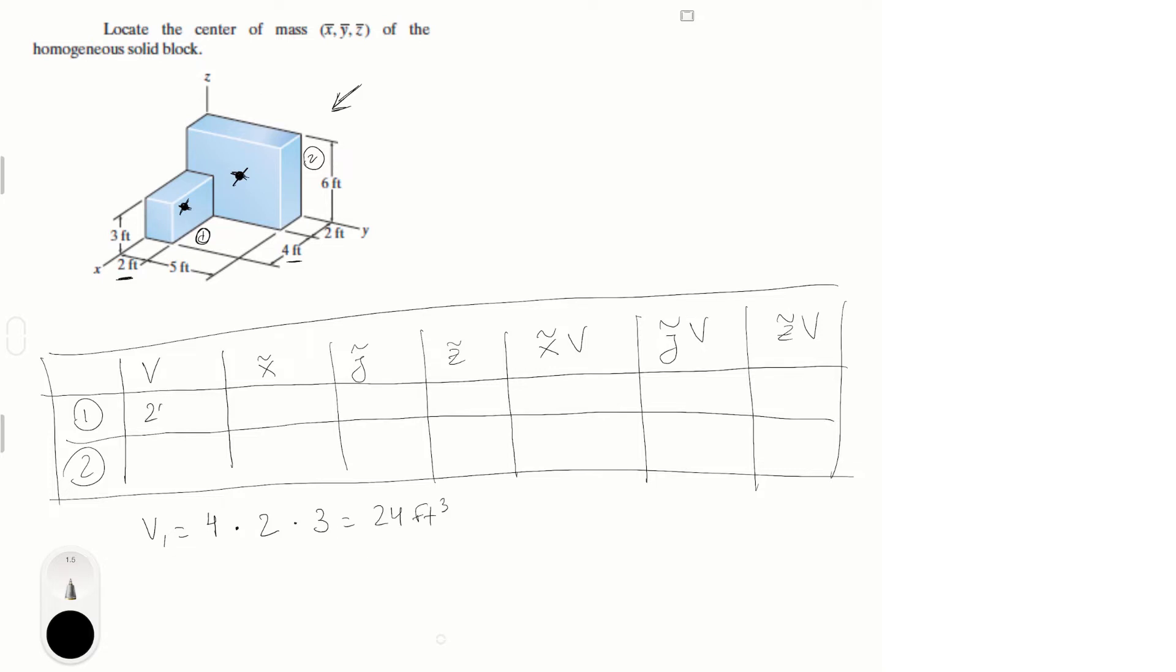Now we need to find the volume of the second shape, which is given by 7 (that's 2 plus 5) times 6, which is this height, times the thickness which is 2 given right here, and this is equal to 84 cubic feet.